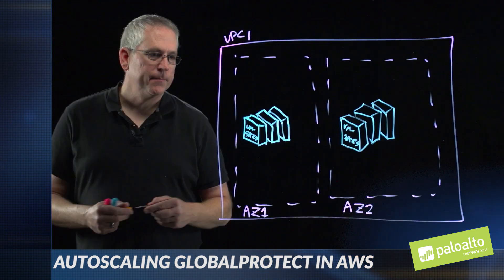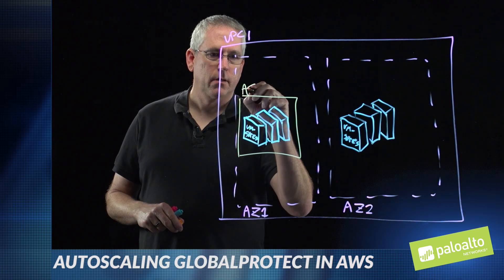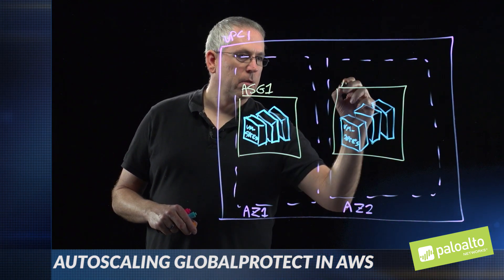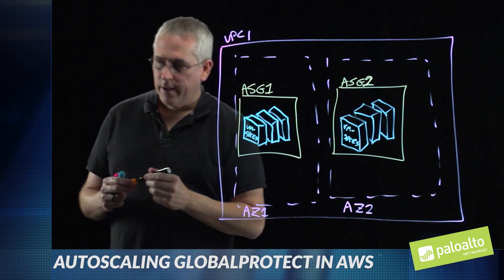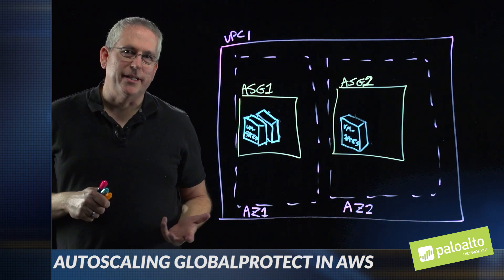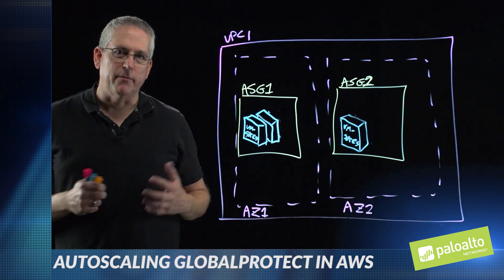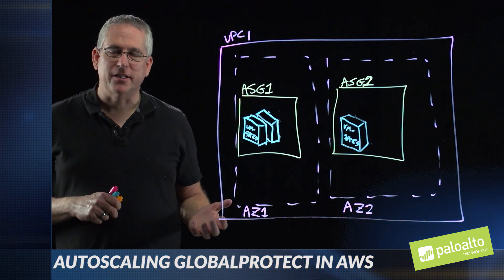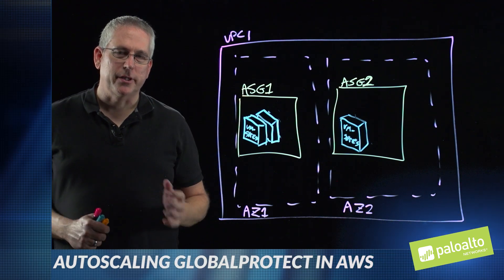We call these auto scaling groups, and this lets us define a group of firewalls that will scale. We can set things like the minimum and maximum, and how conservative we want to be — whether more responsive or more cost-conscientious. Conversely, when activity has died down, because we're paying on-demand for these resources we can also remove those resources on demand and stop paying for them. Three firewalls may be fine for the next few hours, so we get rid of the unneeded ones and tune our infrastructure to the real-time needs of the actual employees.